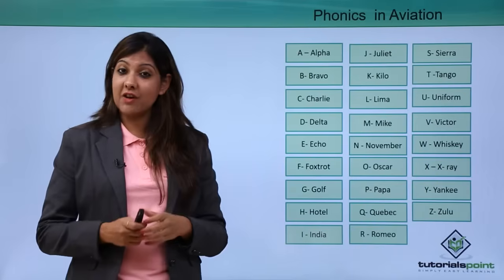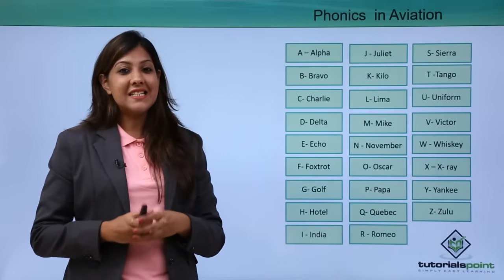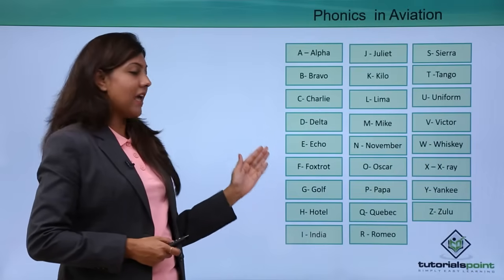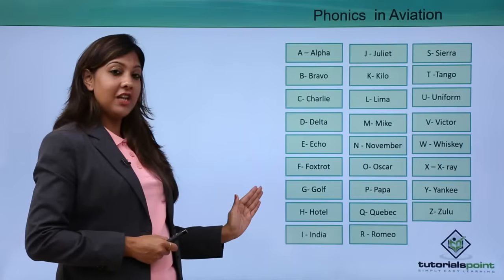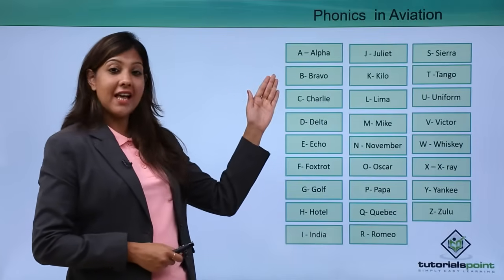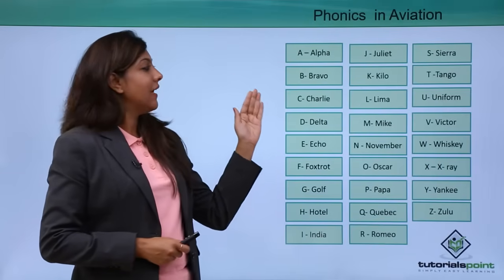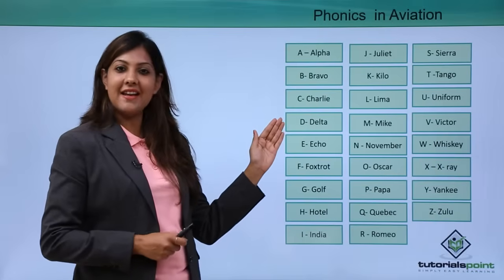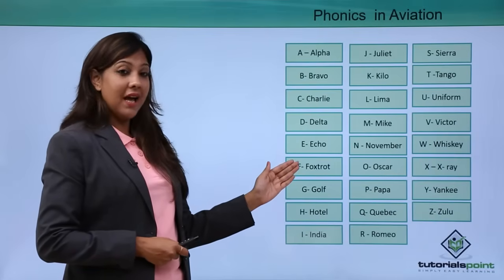A stands for Alpha, B stands for Bravo, C for Charlie, D as in Delta, E as in Echo, F as in Foxtrot, G as in Golf, H as in Hotel, I as in India, J as in Juliet, K as in Kilo, L as in Lima, M as in Mike.